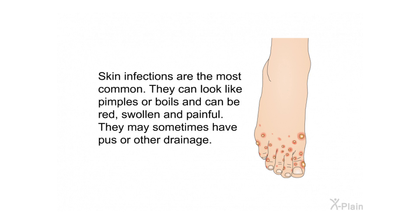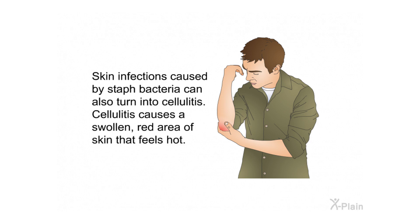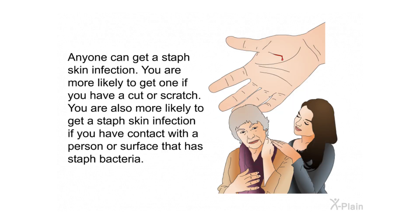Skin infections are the most common. They can look like pimples or boils and can be red, swollen, and painful. They may sometimes have pus or other drainage. Skin infections caused by staph bacteria can turn into impetigo — a skin infection that causes pus-filled sores that turn into a crust on the skin. They can also turn into cellulitis, which causes a swollen red area of skin that feels hot.